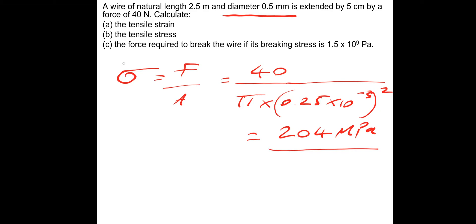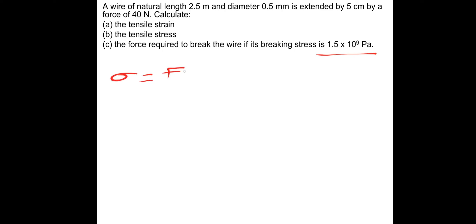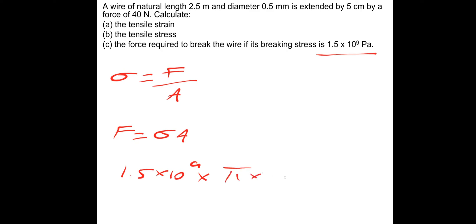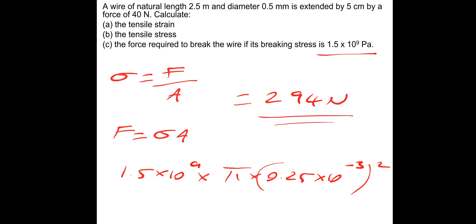Now we have the information to do part C: the force required to break the wire if its breaking stress is 1.5 times 10 to the 9 pascals. Since stress is force over area, we rearrange to get force equals stress times area. So the breaking force is 1.5 times 10 to the 9 multiplied by pi r squared — that's pi times (0.25 times 10 to the minus 3) squared, which equals 0.8 times 10⁻⁷ m² — giving a force of 294 newtons.